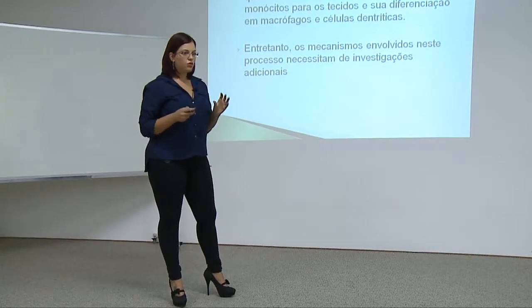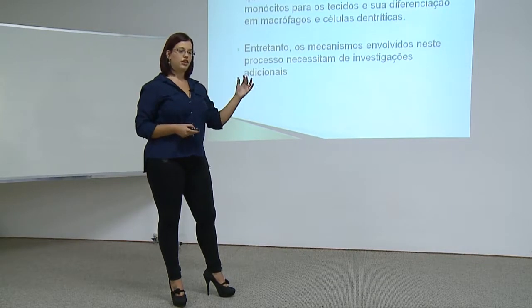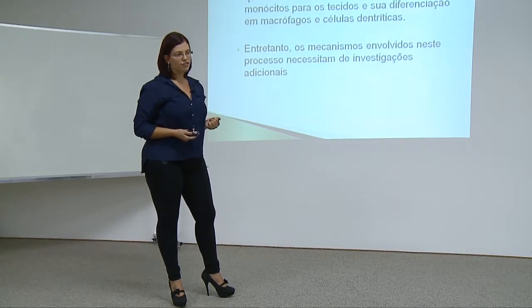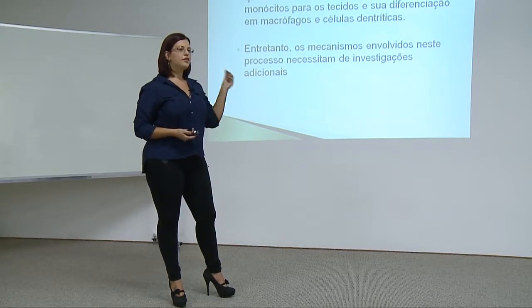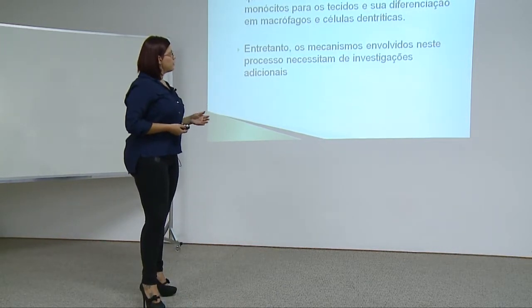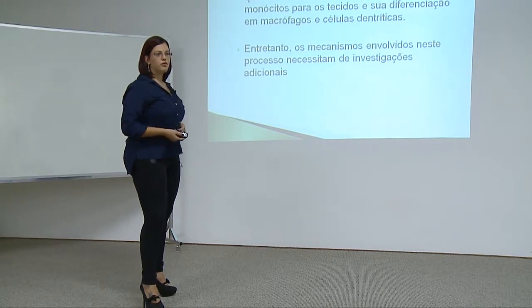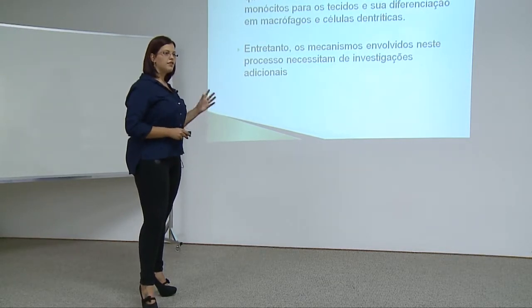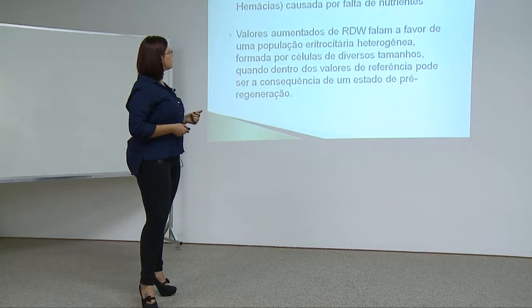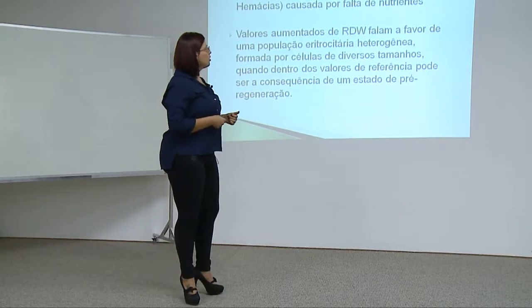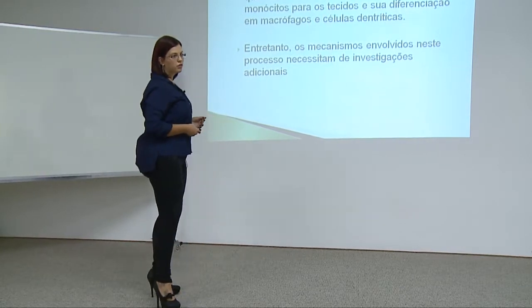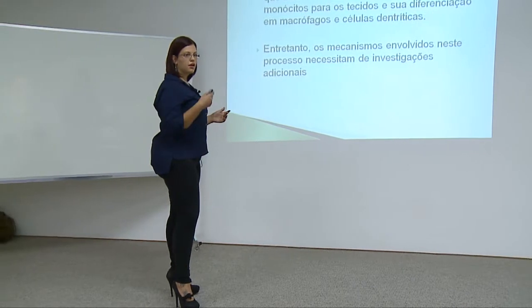Quando as células dendríticas encontram um antígeno no tecido acometido, infeccionado ou inflamado, elas são imaturas e sofrem uma maturação ao capturar esse antígeno. Ao sofrer essa maturação, elas penetram nos vasos linfáticos e seguem sentido ao linfonodo. Para poderem evoluir, elas liberam quimiocinas e citocinas nos tecidos, que atraem mais macrófagos que chegam aos tecidos através do sistema linfático. Conclui-se que o sistema linfático aumenta o tráfego dos monócitos para o tecido acometido.